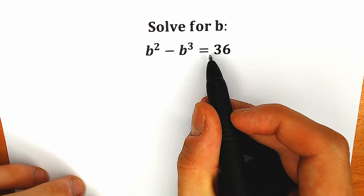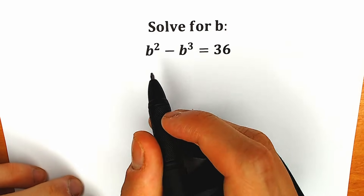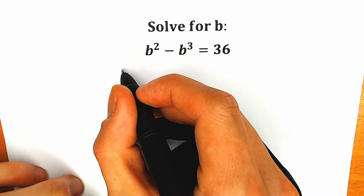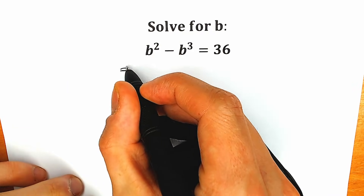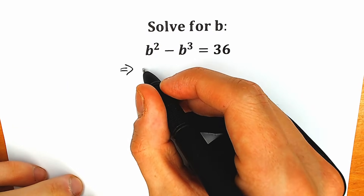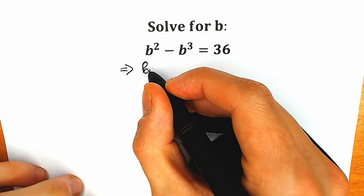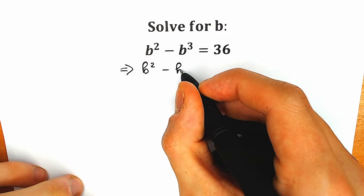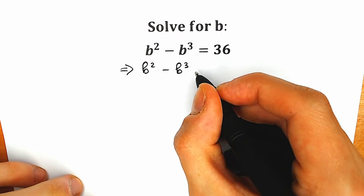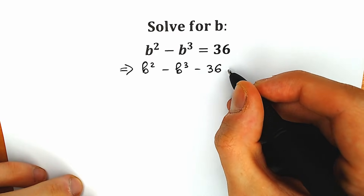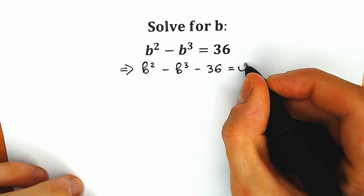First of all, let's write this 36 on the left side. This is our first step, and I'm going to show you my approach for how I solve this type of question. So we have b squared minus b cubed minus 36 equal to 0.